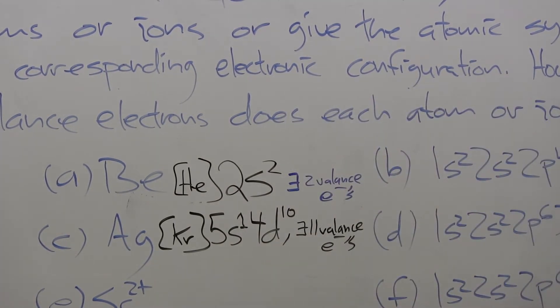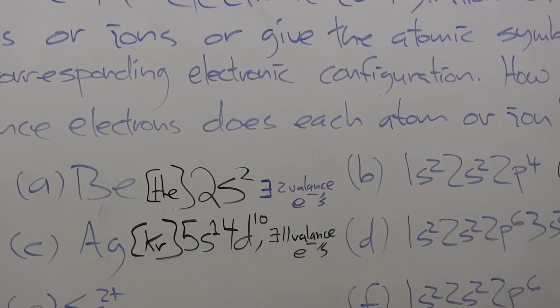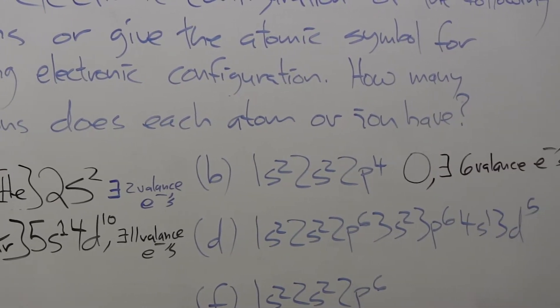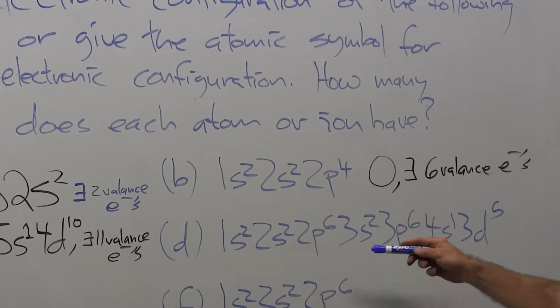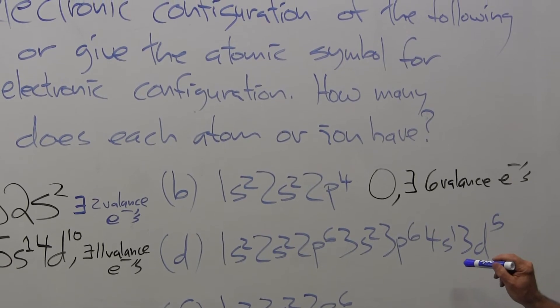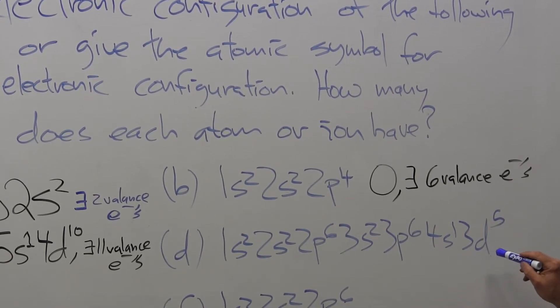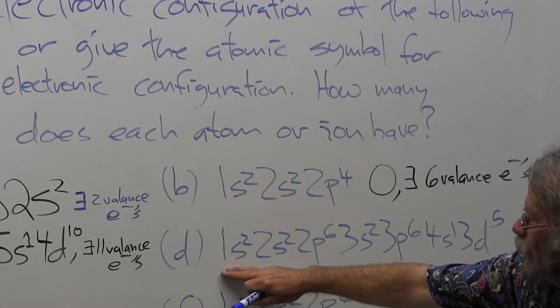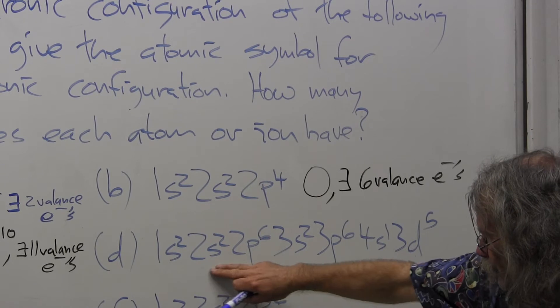Now with part D, I'm given the electron configuration, and this is truly ungainly: 1s2 2s2 2p6 3s2 3p6 4s1 3d5. I've obviously completed the first row, which is helium, gone through the second row, which is neon, and now I've gone through the third row, which is argon.